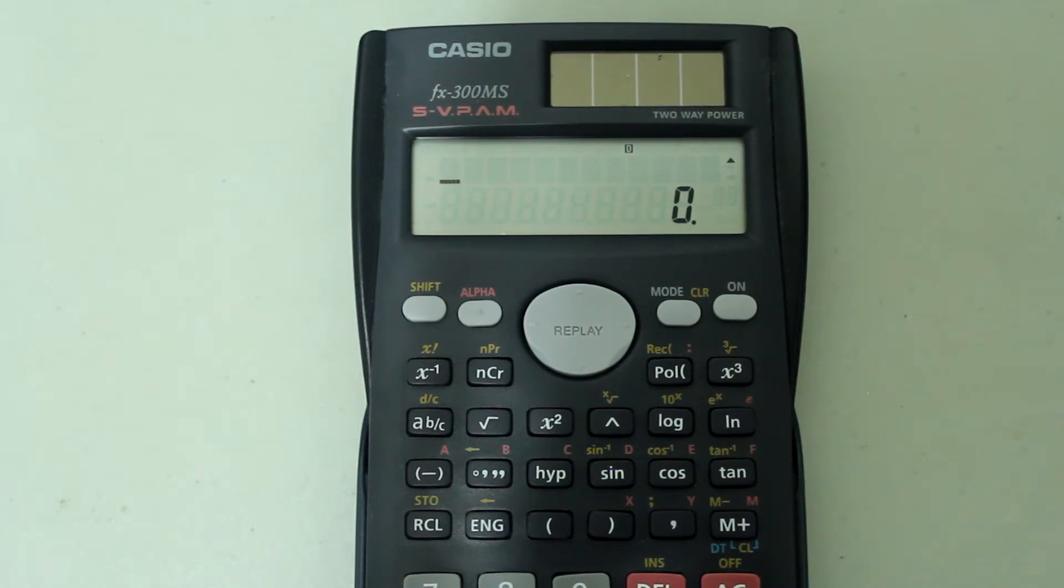Hey guys, this is a video in my Casio scientific calculator tutorial series. In this video, I'm going to show you how to calculate permutations and combinations using your Casio scientific calculator. The model I have here is a Casio FX300MS, however, the steps should be applicable to similar model calculators. I'm going to try and keep the video short, so without further ado, let's get to it.